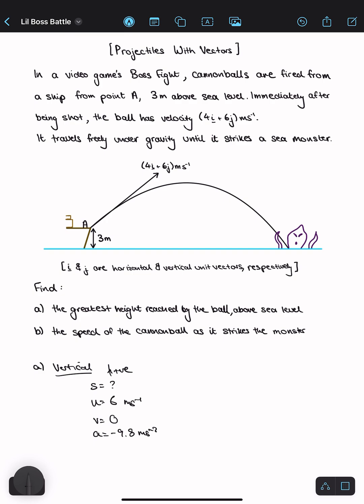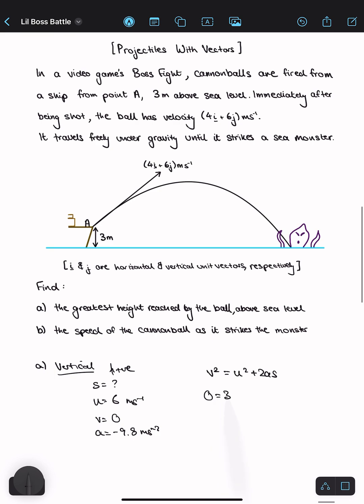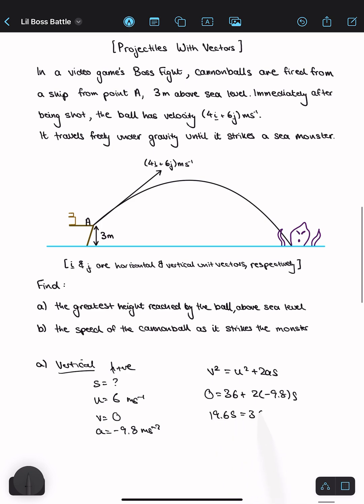The equation that links these variables is v squared equals u squared plus 2as. If I substitute in, I get 0 equals 36 plus 2 times negative 9.8 times s, which rearranges to 19.6s equals 36, and s equals 1.83 meters.